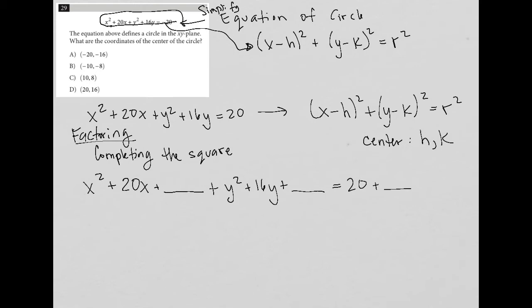Completing the square just means I need to find what number can I add here that makes this x portion a complete square. I take half of the middle term, so 20 divided by 2, which is equal to 10. And then I square that number, 10 squared is equal to 100. And that's what goes here.